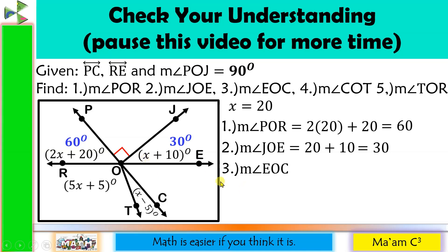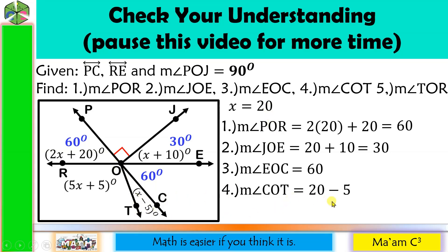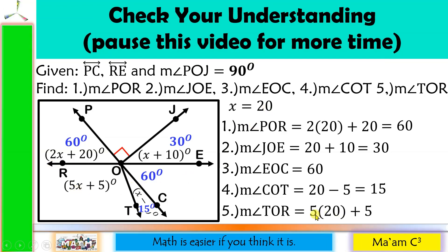Number 3: Angle EOC is opposite angle POR, so it is also 60 degrees — they are vertical angles. Number 4: Angle COT — substituting 20 gives 20 minus 5 equals 15 degrees. And angle TOR — substituting 20 gives 5 times 20 plus 5, which is 100 plus 5 equals 105 degrees.